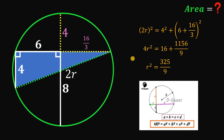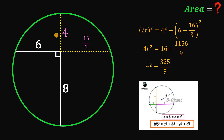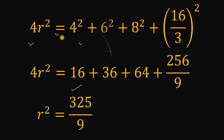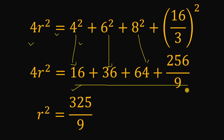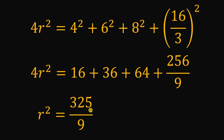Using the second method — the formula for the radius given two perpendicular chords — we square the four segments 6, 4, 16/3, and 8, then set them equal to 4r²: 4r² = 4² + 6² + 8² + (16/3)². Computing: 16 + 36 + 64 + 256/9, then dividing by 4, we again get r² equals 325 over 9.